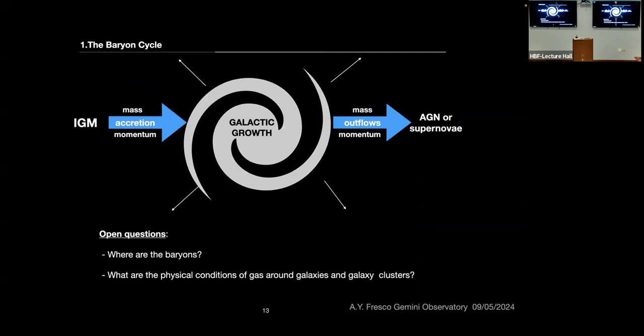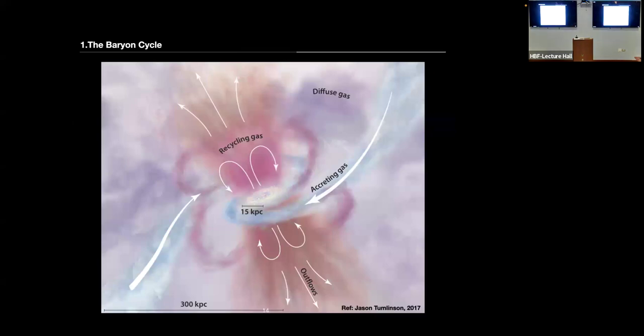The questions, considering the baryon budget that I just mentioned, are where are these diffused baryons that are supposed to be connecting all the galaxies to each other? And what are the physical conditions around the galaxies and the galaxy clusters? I just showed you a very basic image of how everything is supposed to work. But we know it's a lot more complicated than just inflows and outflows and one filament coming in and out. This is also a very well-known image. It's how the diffuse gas is just all over the galaxy. And it's really hard to disentangle which is which in the end.